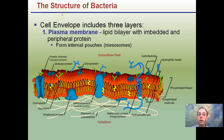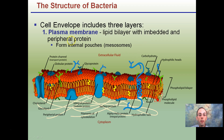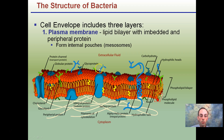The structure of bacteria has three basic layers. The plasma membrane is one — there will be an extensive video on this, but just know it's a lipid bilayer: two layers containing lipids, which are fats with embedded and peripheral proteins. These form internal pouches and allow for cell recognition, communication, and exchange of nutrients.